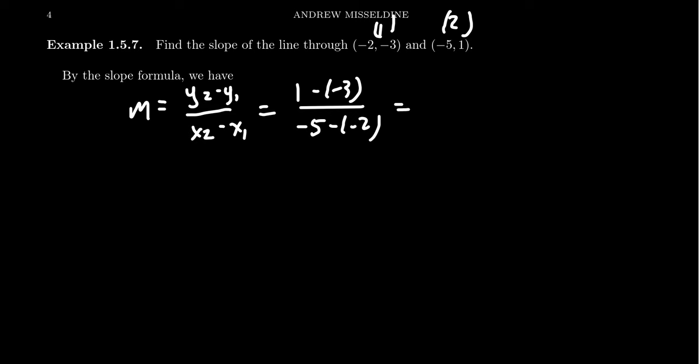And so you get 1 minus a negative 3, it's a double negative, so you get 1 plus 3. Same thing in the bottom, you get negative 5 plus 2 in that situation. 1 plus 3 is 4. Negative 5 plus 2 is a negative 3. And so we can write this as negative 4 over 3. This is the slope.